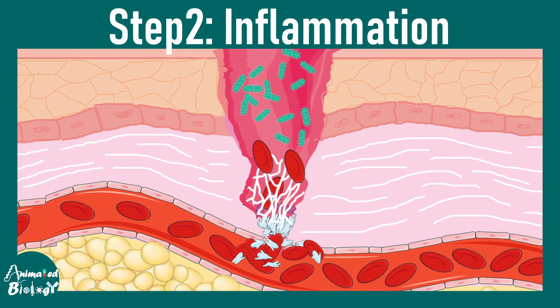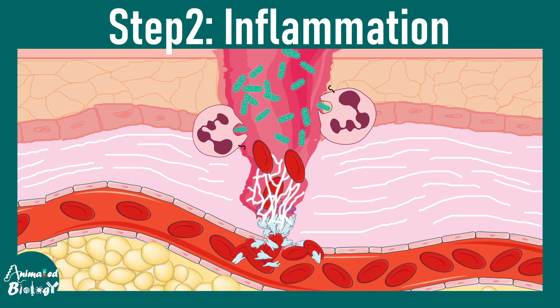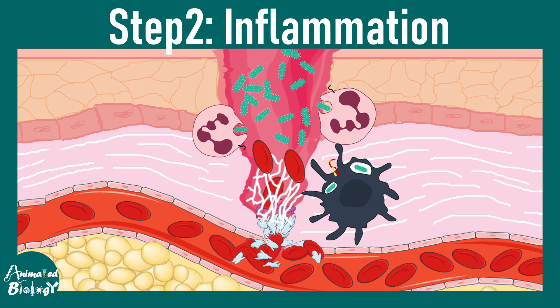Imagine there are some pathogens which have entered the body through that injury site — they have to be taken care of. Neutrophils are actually the fast responders in that context. They go and try to fight the bacteria and engulf the pathogen, but they also bring in their friends the macrophages, though that happens later on.